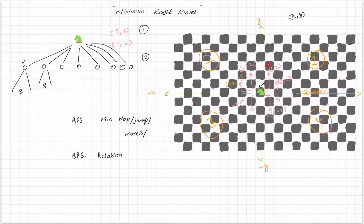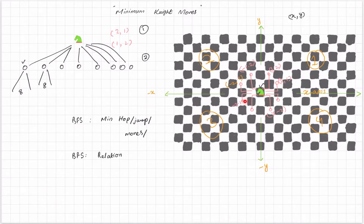This BFS can be optimized if we only deal with two moves, because whatever the minimum number of moves it takes to reach one symmetric node will be the same for its mirror node. So the same count applies to symmetric positions across quadrants.